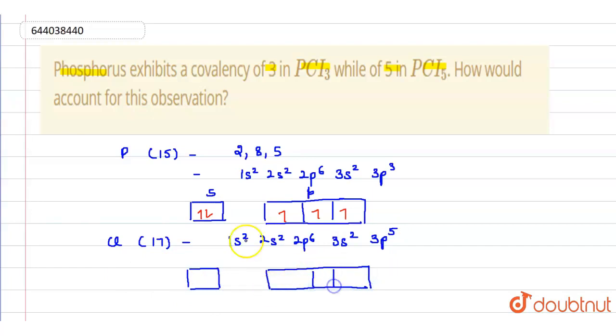In s orbital there are two electrons, and in p orbital there are five electrons: one, two, three, four, five. So here we can see that chlorine needs one more electron to complete its octet.